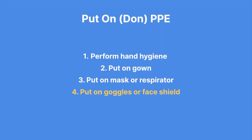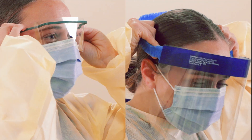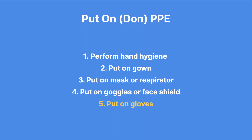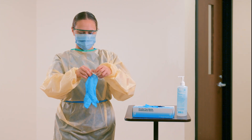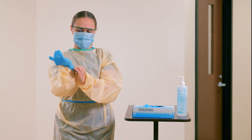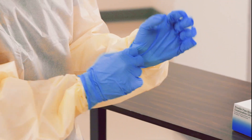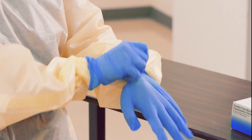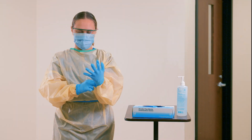Step 4: Put on goggles or face shield. Goggles and face shields protect your eyes and mucus membranes from contamination during a procedure. Place the goggles or face shield over your face and eyes and adjust to fit. Step 5: Put on gloves. Gloves are vital for procedures involving potential contact with body fluids, blood, mucus membranes, or non-intact skin. Pull the glove up and over the gown's cuffs. This ensures a continuous barrier of protection by sealing the gap between the glove and the gown, minimizing the risk of exposure to infectious agents.